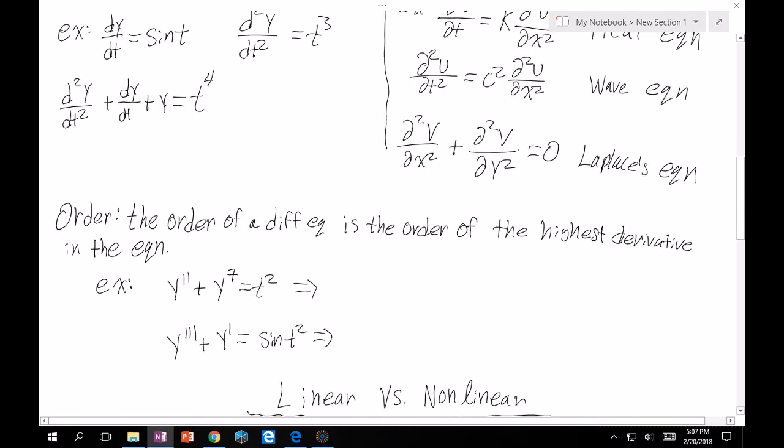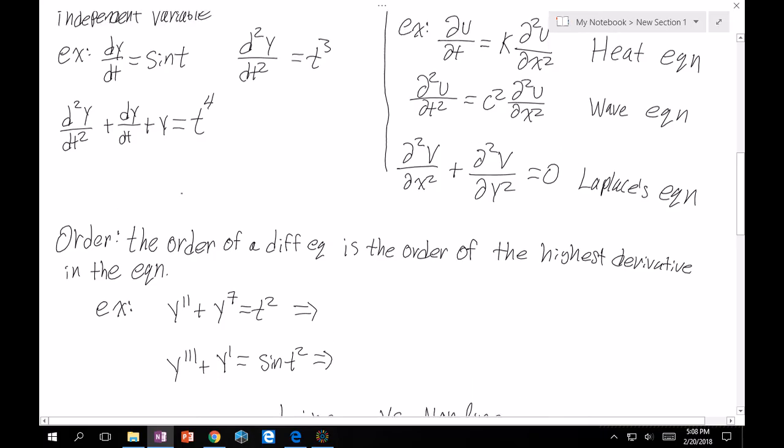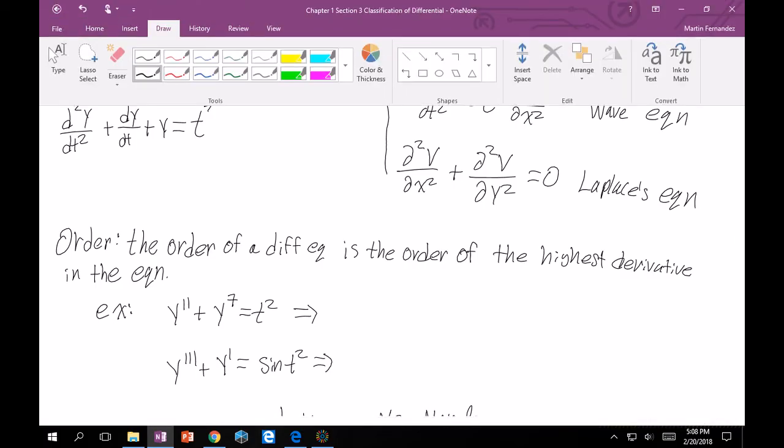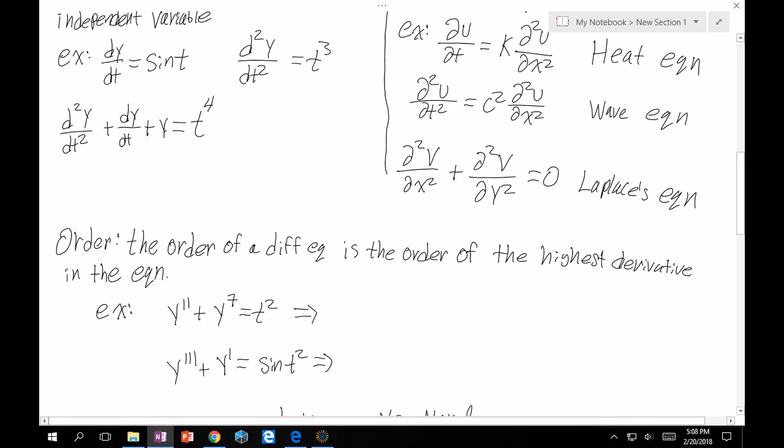After that, it makes sense to go into the order of an ordinary differential equation. The order is given as the order of the highest derivative in the equation. So all you have to do is look at the highest derivative. For this first one, y'' plus y to the 7 equals t squared. Here, we don't care about this y to the 7, because that's not a derivative. We only care about this one here. Because we take the highest derivative here as the second derivative, this is of second order.